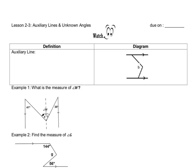Alright, this is lesson 3 of unit 2. We're talking about an auxiliary line when we're trying to solve for angles in a picture. An auxiliary line is just a line that is added to a figure to help in a problem.